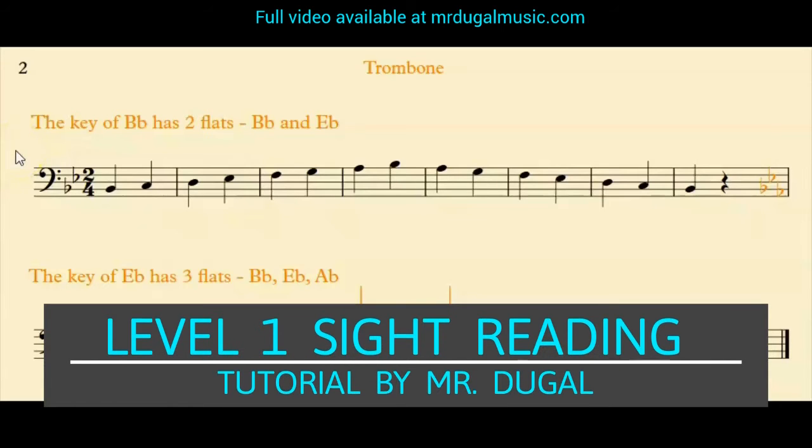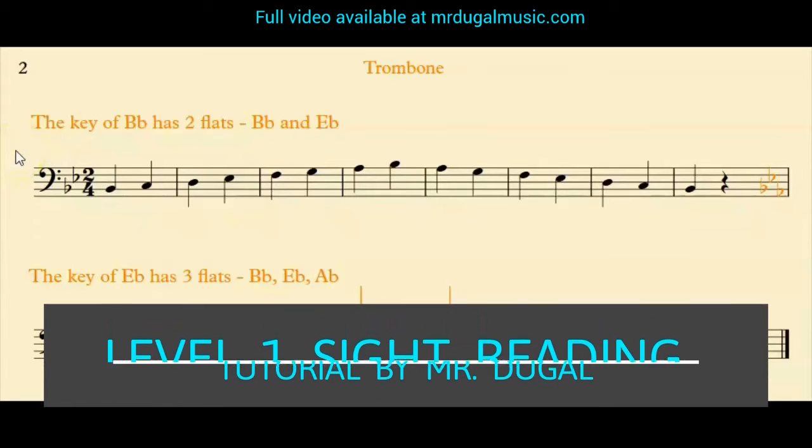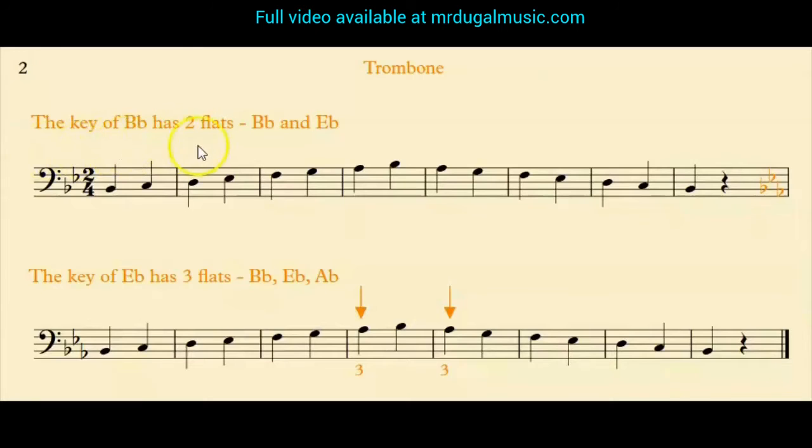For trombone level 1 NYSSMA, you have to play in two different keys. The first key is B-flat, which has two flats, the B-flat and E-flat, as shown here in the key signature.